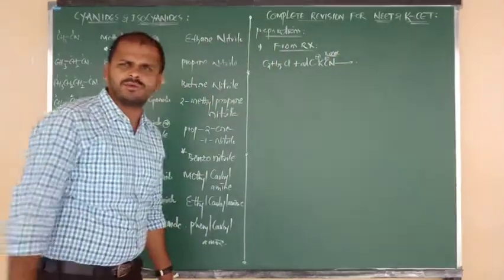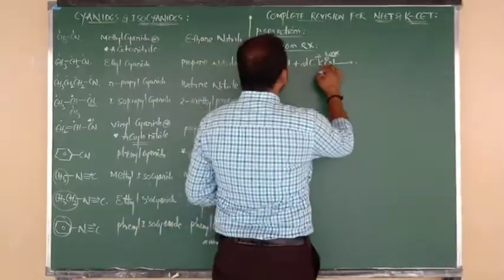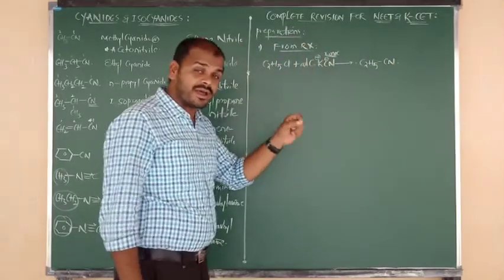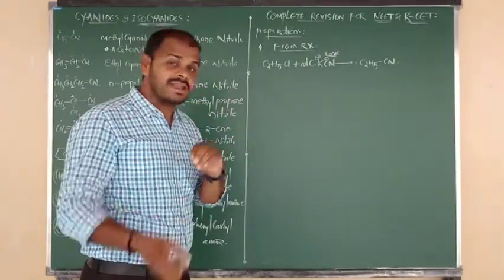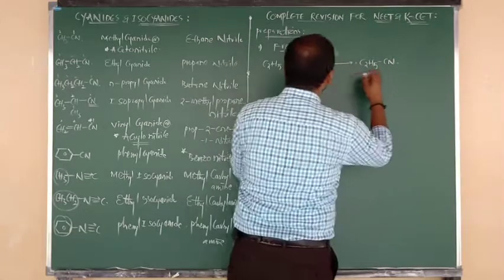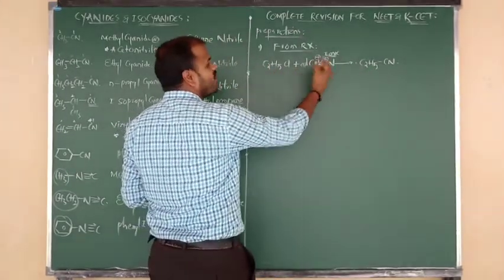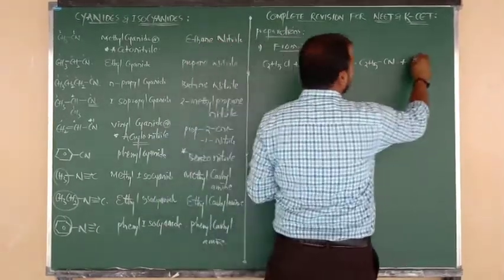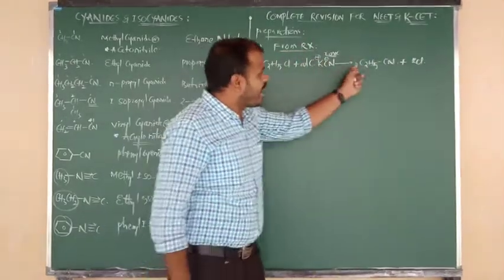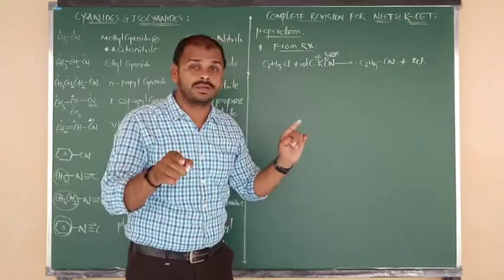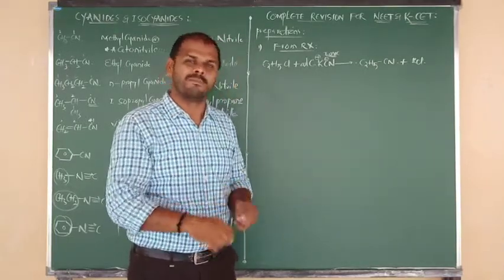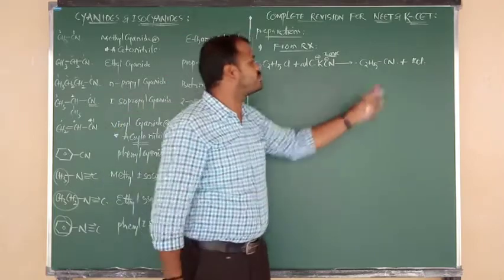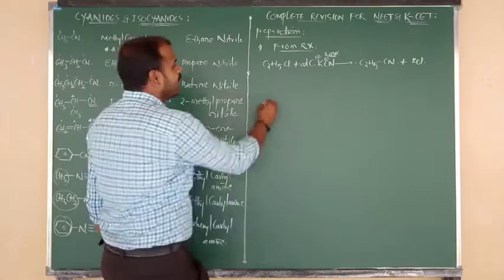Ethyl chloride reacts with C≡N minus. Since KCN is ionic, carbon is the nucleophilic center — the bond forms through C, not N. So the major product is ethyl cyanide (C2H5CN). KCl is eliminated as a byproduct. Ethyl isocyanide is also possible but is a minor product.